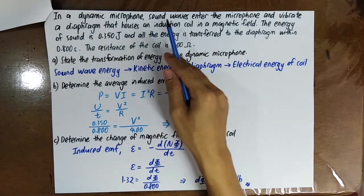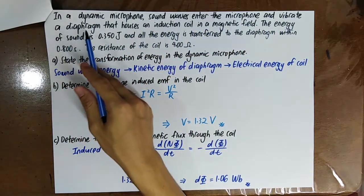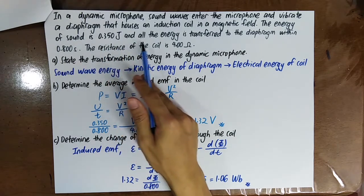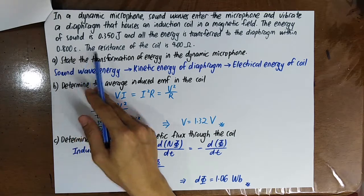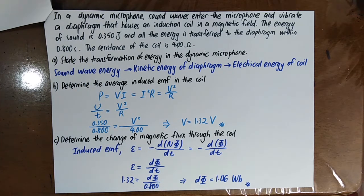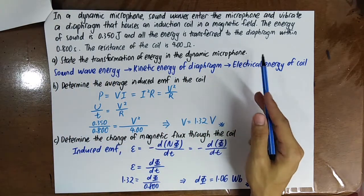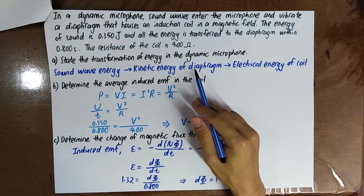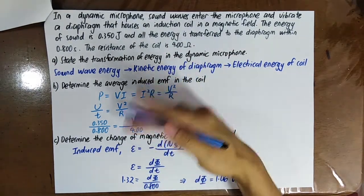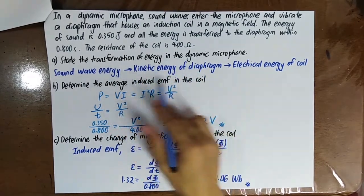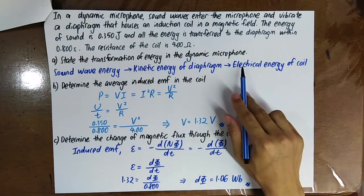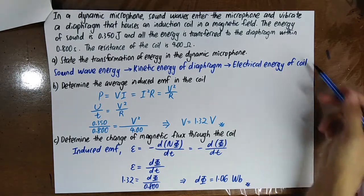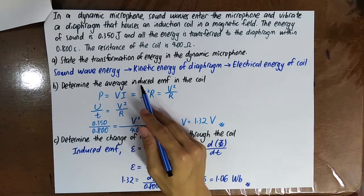Worked example: In a dynamic microphone, sound waves vibrate a diaphragm housing an induction coil in a magnetic field. The sound energy is 0.35 joule, all transferred to the diaphragm within 0.8 seconds, and the coil resistance is 4 ohm. The energy transformation is: sound wave energy → kinetic energy of the diaphragm → electrical energy of the coil via electromagnetic induction.